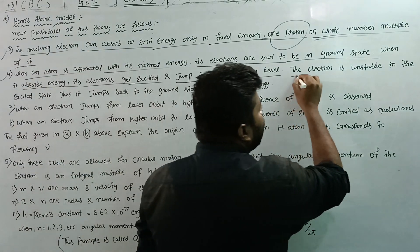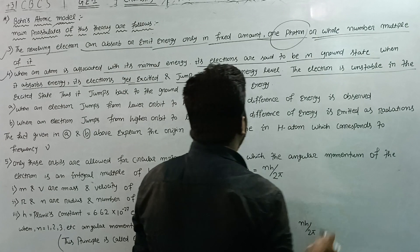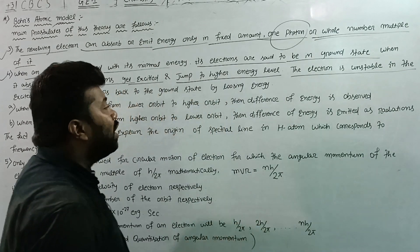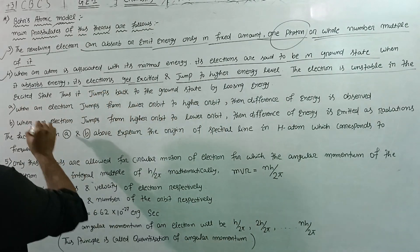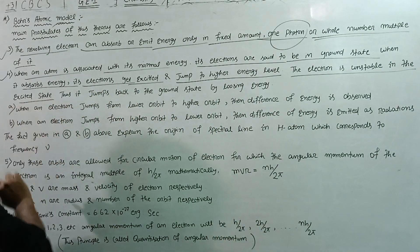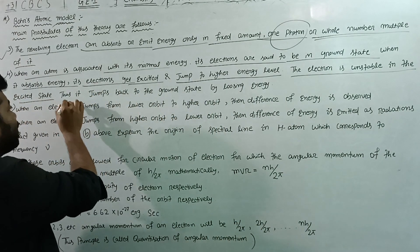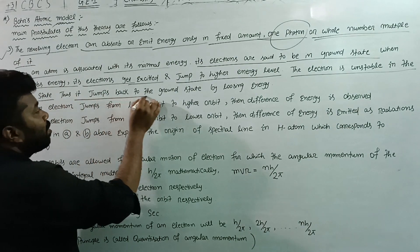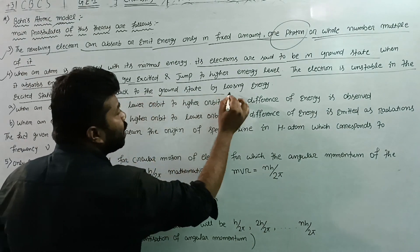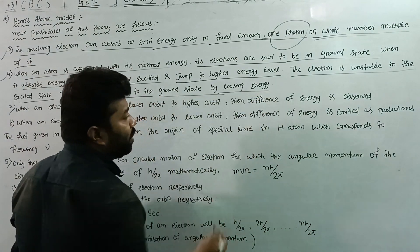The electron is unstable in the excited state. Thus, it jumps back to the ground state by losing energy.